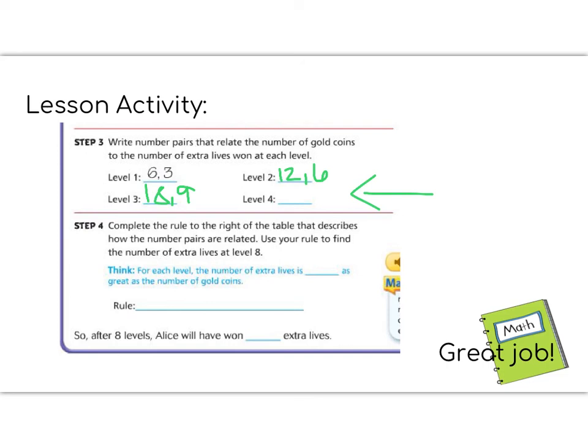Now it says, let's look at the rule. Remember we talked about this rule. If we are looking at six to 12, then we could divide 12 in half, or we could multiply six by two. So it says for each level, the number of lives is one half the number of gold coins. So our rule is going to be to multiply by one half, or divide by, you fill in this blank here. What are we going to divide by? The opposite of multiplying by one half.